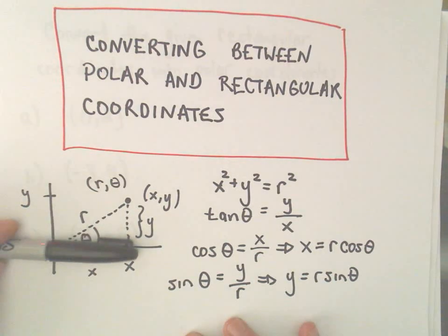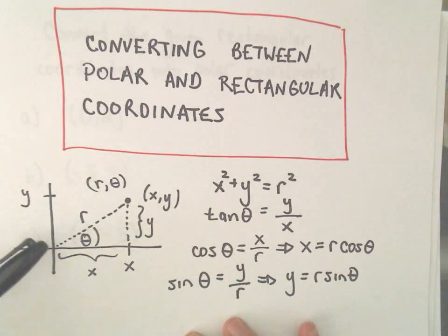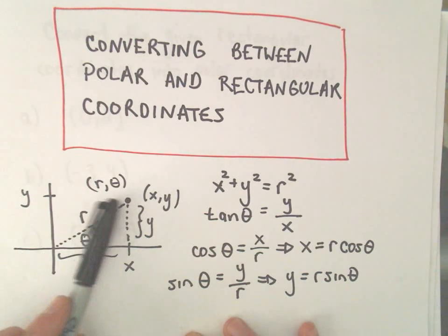In polar coordinates, suppose we make an angle of theta with a positive x-axis, and then we go at a distance of r. Well, in polar coordinates, we would label this point r, theta.